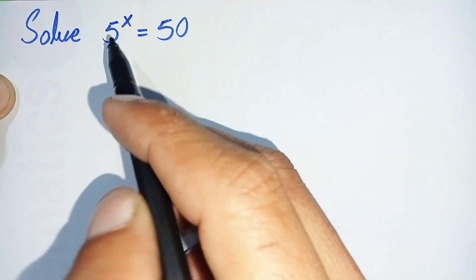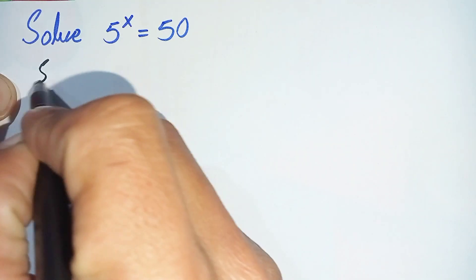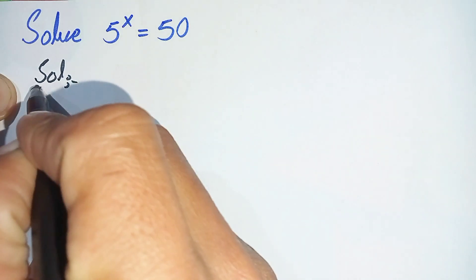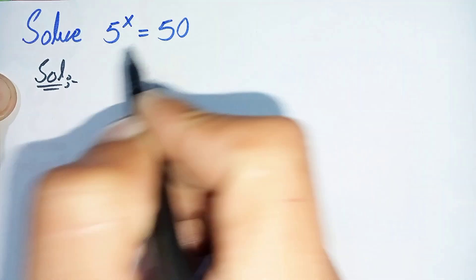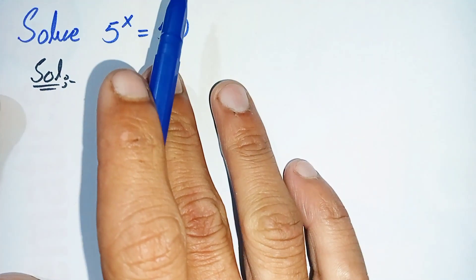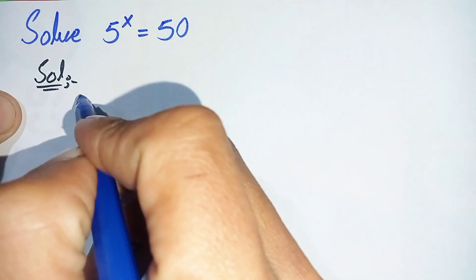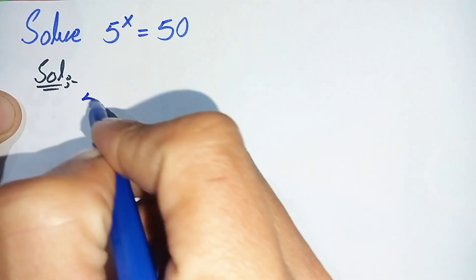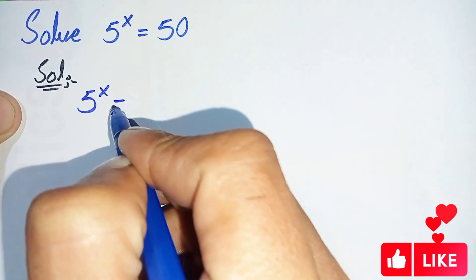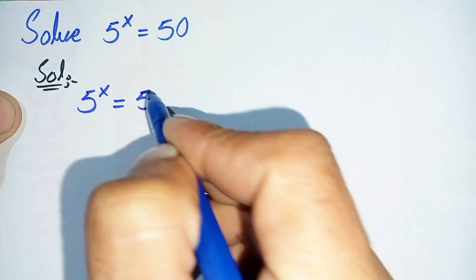To solve this question properly, first we will write the solution and rewrite this question step by step. The question is 5 raised to power x is equal to 50.